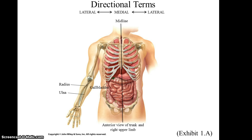The first set of directional terms we're going to cover is medial and lateral. Medial means closer to the midline, and lateral means further away from the midline. So for instance, in this image we see that the ulna is lateral to the gallbladder — it is further from the midline — while the ulna is medial to the radius, meaning it is closer to the midline.